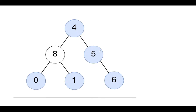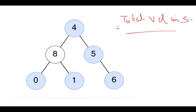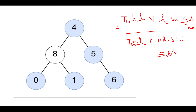At each node, we are interested in finding out the average of the total values that exist in that subtree divided by the total number of nodes in that subtree. This gives us the average, and once we identify this value we can simply compare it with the current node value. If they are equal, that means we have found one such instance, and we need to identify the total such instances where this condition is met.